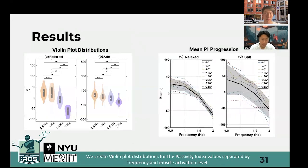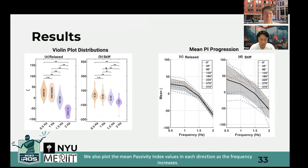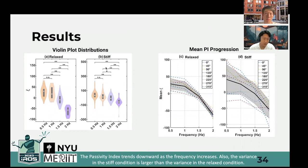We create violin plot distributions for the passivity index values separated by frequency and muscle activation levels. As the frequency increases, the passivity index decreases and transitions from a positive to a negative value. We also plot the mean passivity index values in each direction as the frequency increases. As can be seen, the passivity index trends downwards as the frequency increases, and the variance in the stiff condition is larger than the variance in the relaxed condition.